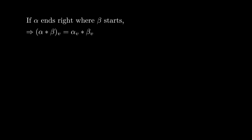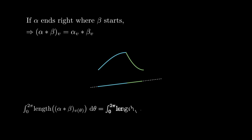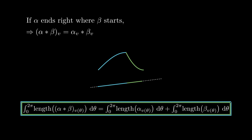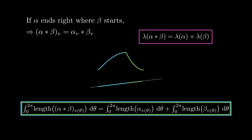The third property is about concatenation. When we have two curves such that one begins precisely where the other ends, the projection of the concatenation on any direction is the concatenation of the corresponding projections. So the length of the projection of the concatenation is the sum of the lengths of the projections. Integrating with respect to all directions, we get that our functional lambda satisfies the desired concatenation property.